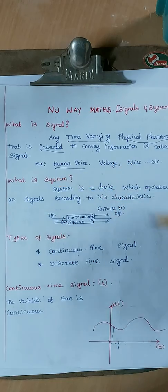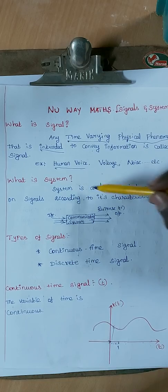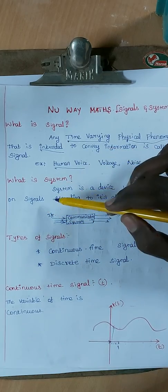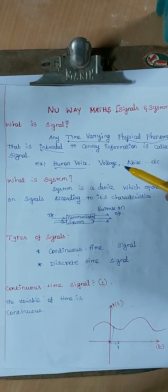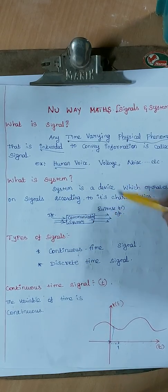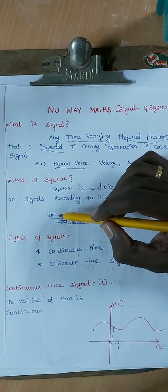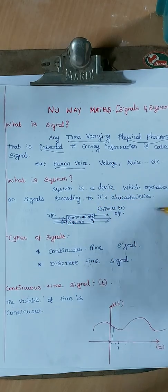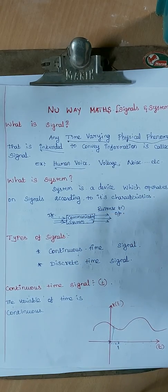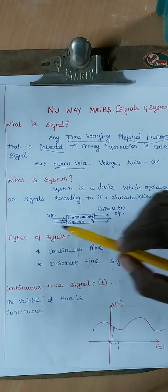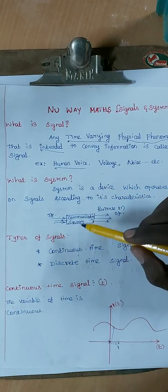What is a system? A system is a device which operates on signals according to its characteristics. The input goes in, and the output is a response. The best example is a communication system.